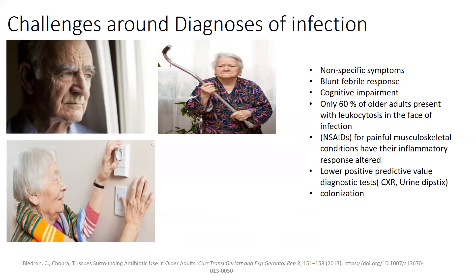Diagnostic tests such as chest X-ray and urinary dipsticks have a low positive predictive value in the elderly population compared to younger patients. The lack of clinical signs and symptoms altogether further narrows the fine line between colonization and infection, leading to a higher suspicion of infection and hence more common antibiotic use.